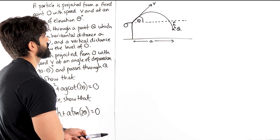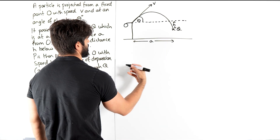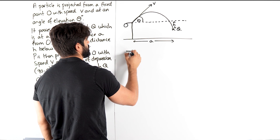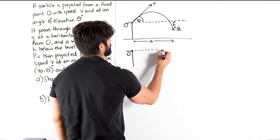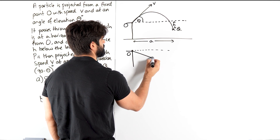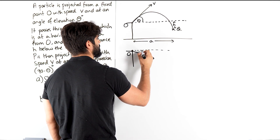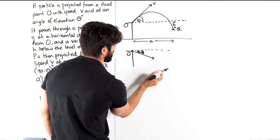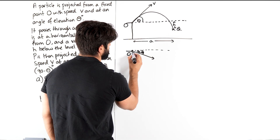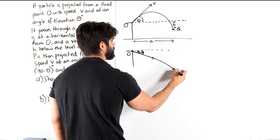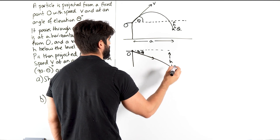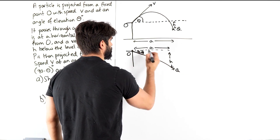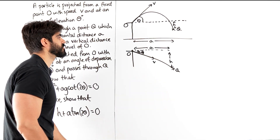In the second situation, it looks exactly the same but we're projecting it downwards now. Here's my level and we're projecting it down this way, where this angle is 90 minus theta. It's going to go down like this and hit Q again, where it's H below and it hits Q again. So this is still A, and it's still with speed V. These are our two situations.